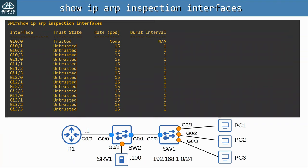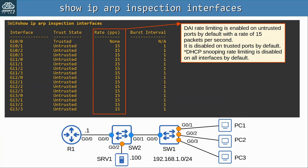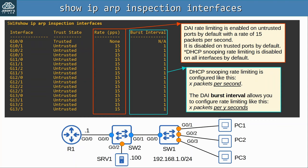Let's check out the DAI show command: show ip arp inspection interfaces. First, you can see the trust state of each interface — on SW1, only G0/0 is trusted, as I configured. This column shows the DAI rate-limiting settings. DAI rate-limiting is enabled on untrusted ports by default at a rate of 15 packets per second, but it is disabled on trusted ports by default. In contrast, DHCP snooping rate-limiting is disabled on all interfaces by default. DAI also has a burst interval feature, allowing you to configure rate-limiting as X packets per Y seconds, providing more flexibility.